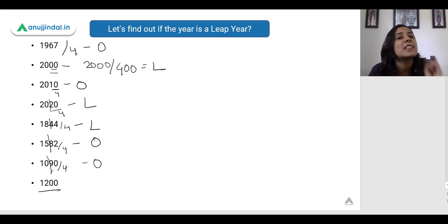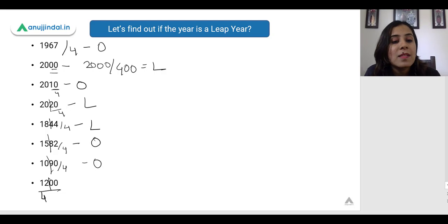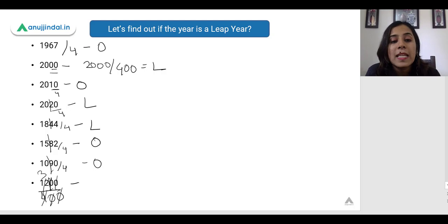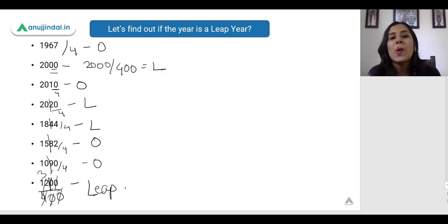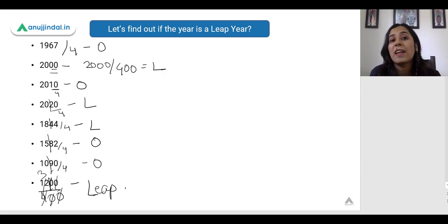1200 — this is again a century year because the last two digits are 00. Divide this by 400 — we get the answer 3, and yes, 1200 is completely divisible by 400, so this is a leap year. I hope you know how exactly to identify a leap year and an ordinary year and you know the characteristics of a leap year.